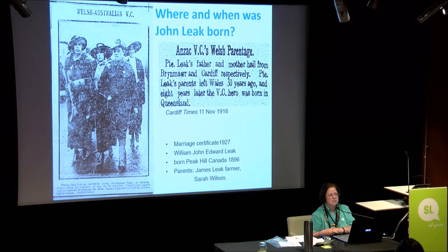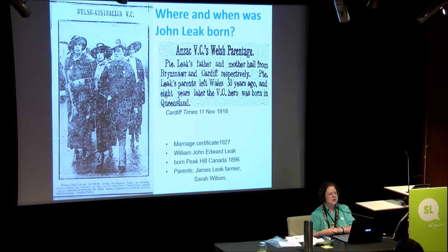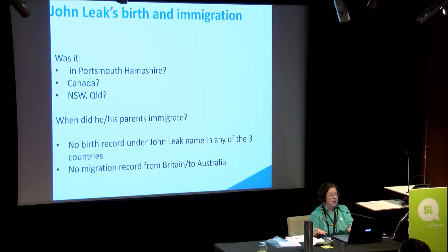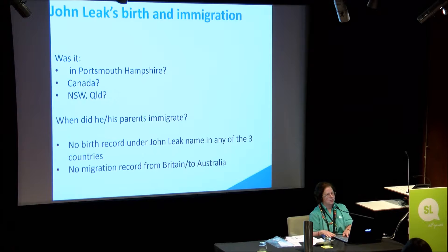He was born anywhere in the 1890s as far as the records are concerned. He married again in 1927 as William John Edward Leake, and on his marriage record he was born in Canada. Parents: James Leake, Farmer, and mother Sarah Wilson. So we now have three options. I'm obviously looking at immigration records. Can find a George Leake, can't find a birth for him anywhere. Was it Portsmouth, Canada, or New South Wales? At other stages it's New South Wales. I've chased John Leakes all over the place and there are stacks of them, but we cannot track this one.